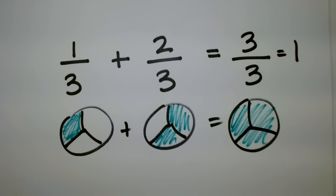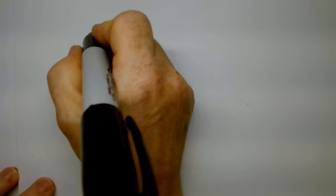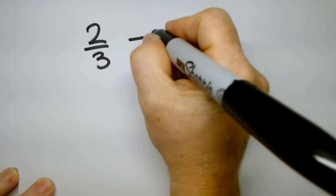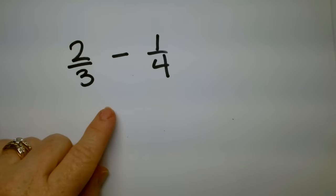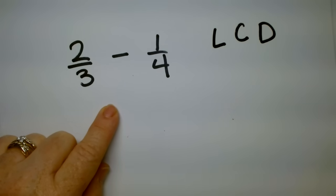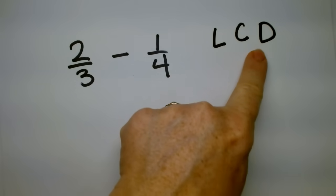So this was a quick review. What if they don't match? I have two-thirds minus one-quarter. We're going to find something called least common denominator, LCD, least common denominator.